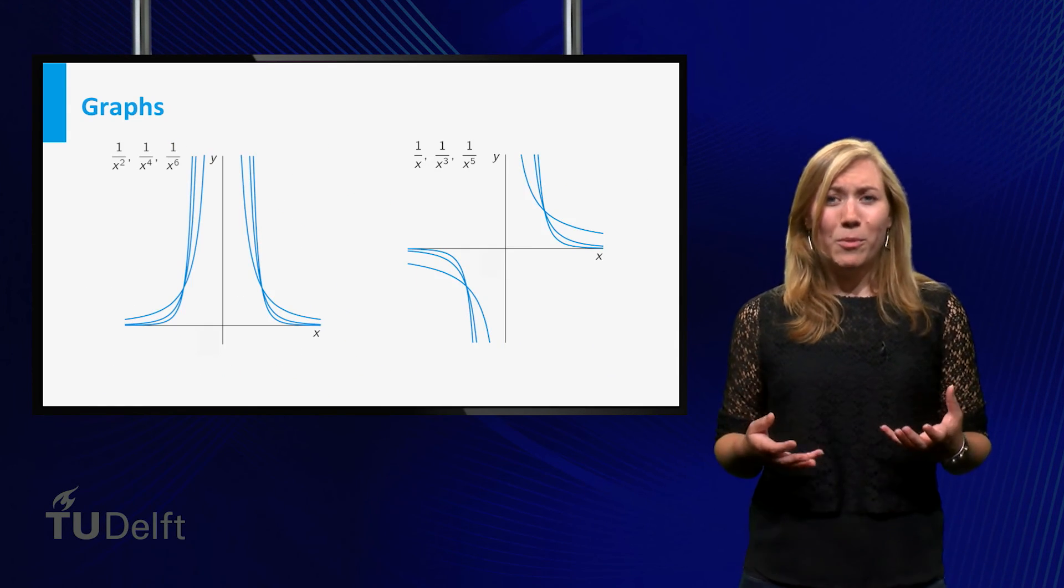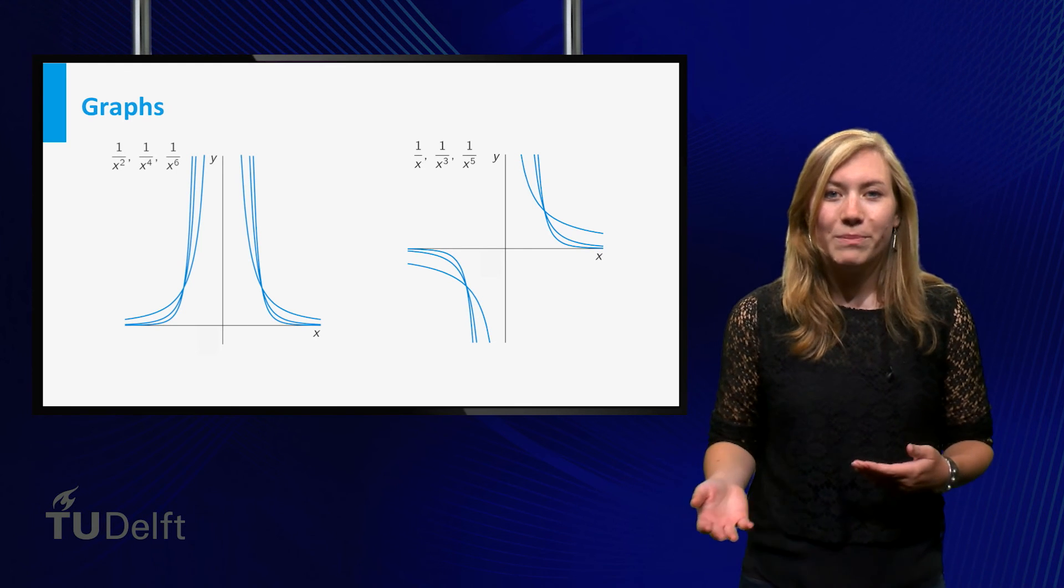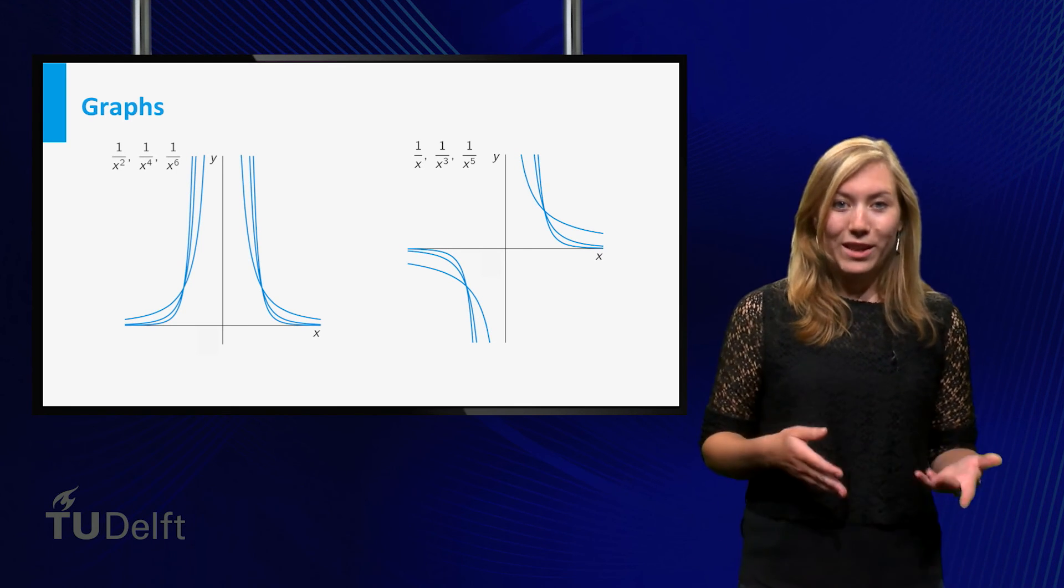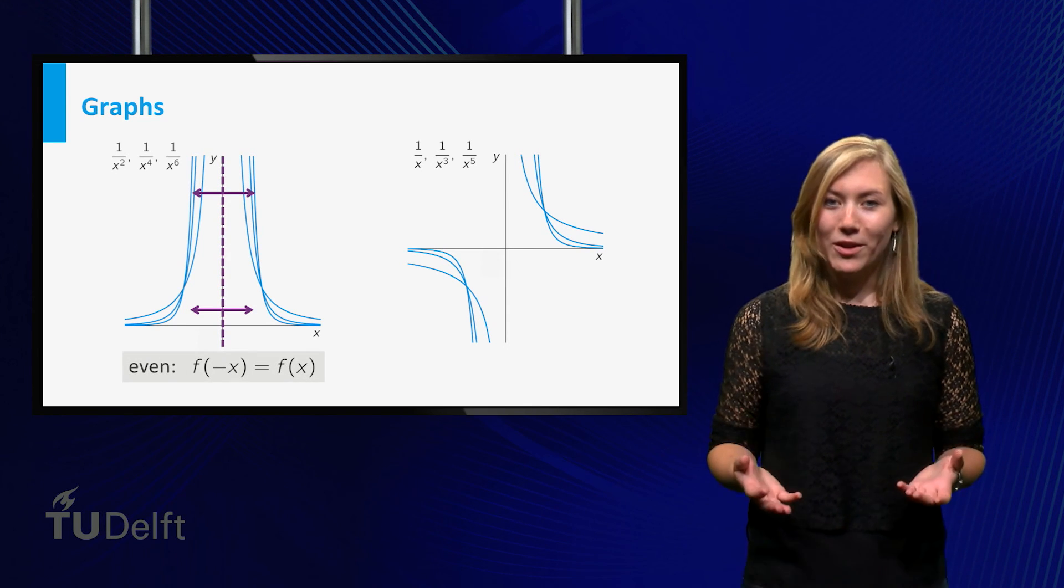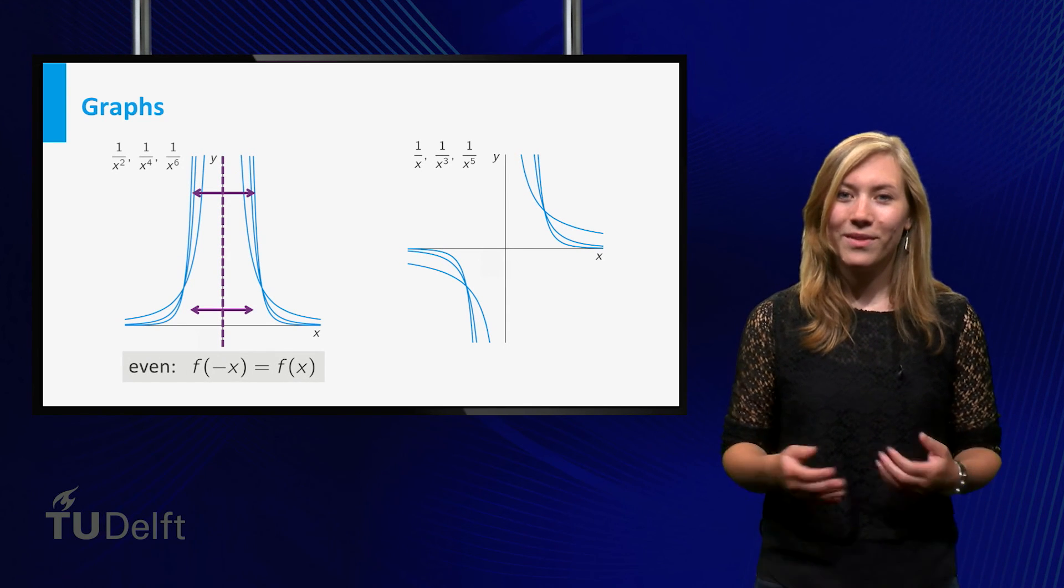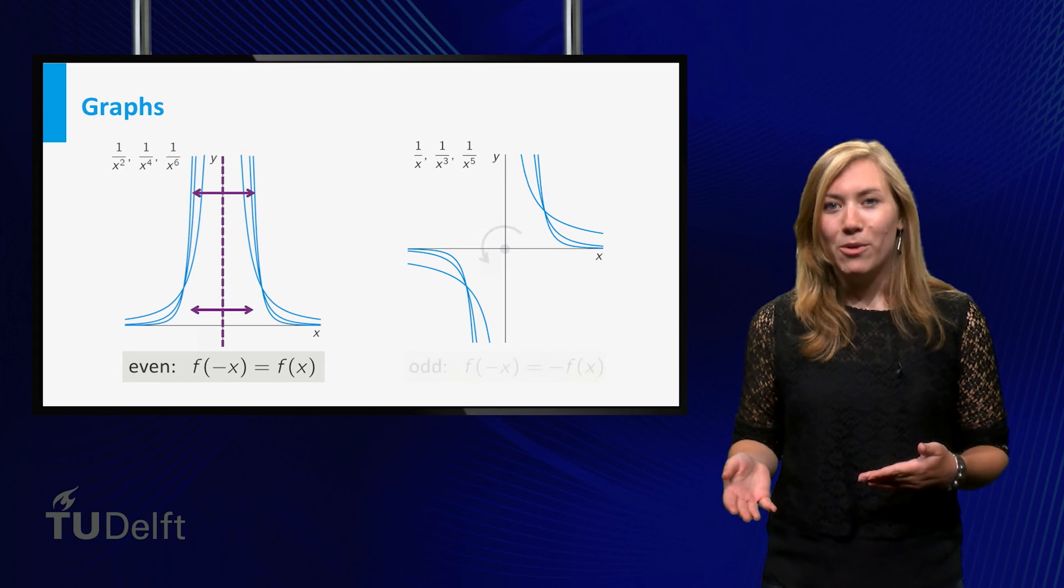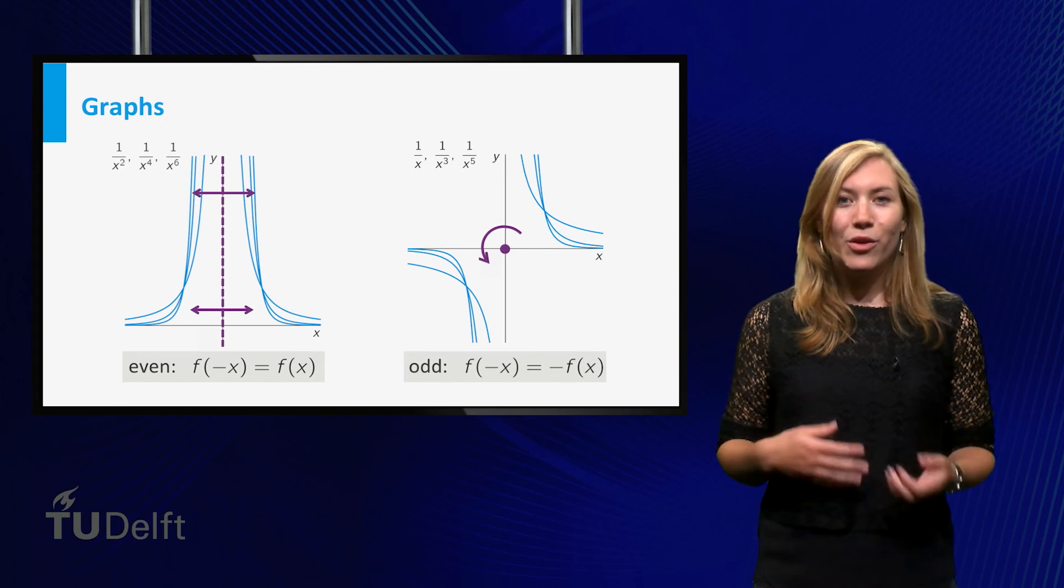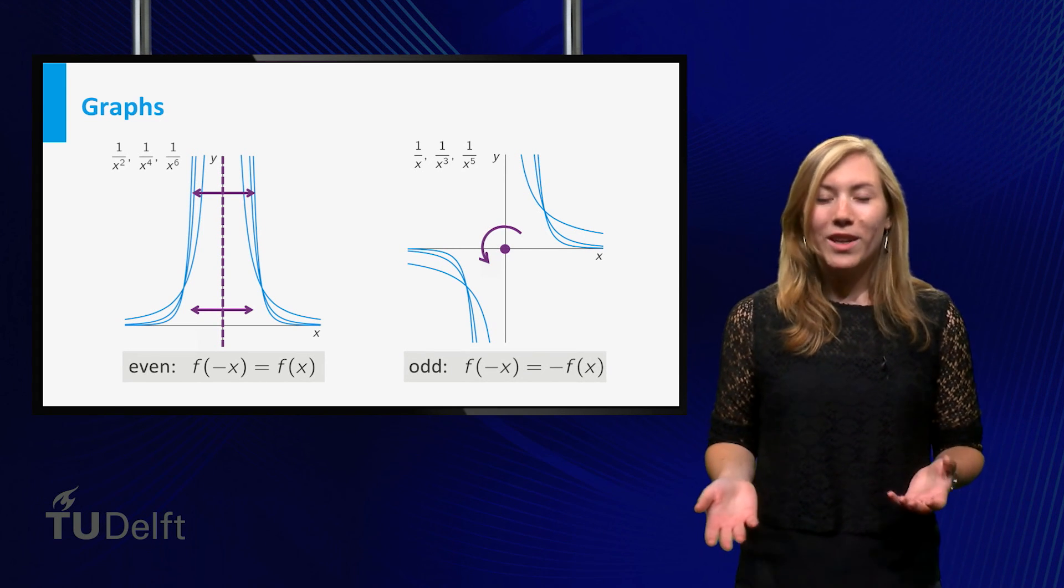We have the same symmetries as for positive powers. For even powers, the functions are even and therefore the graphs are symmetric in the vertical axis. For odd powers, the functions are odd, so the graphs are point symmetric in the origin.